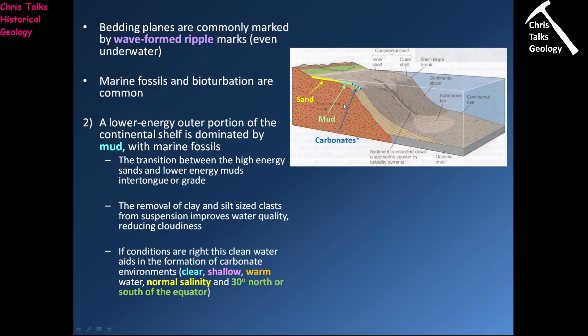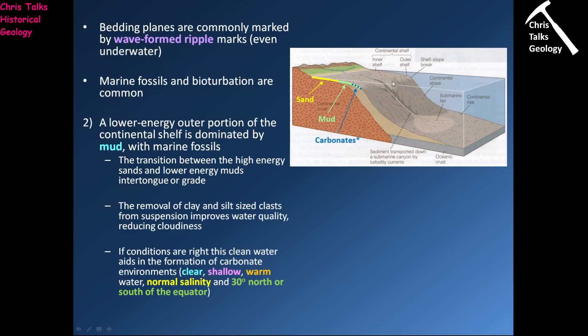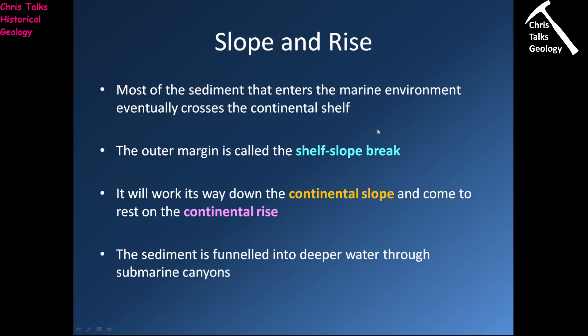Your normal continental shelf, like the east coast of the United States, would have a sand-dominated environment transitioning into a mud-dominated environment. Most of the sediment that enters the marine environment will eventually cross the continental shelf and go over the shelf break — also sometimes just referred to as the shelf break. That's the line marking the edge of the continental shelf, and once you go across it, you're coming down the continental slope. The sediments will work their way down the slope and come to rest at the bottom, which is called the continental rise.